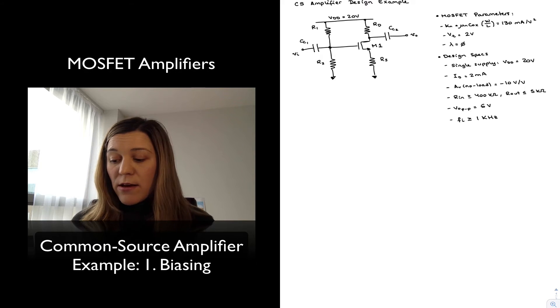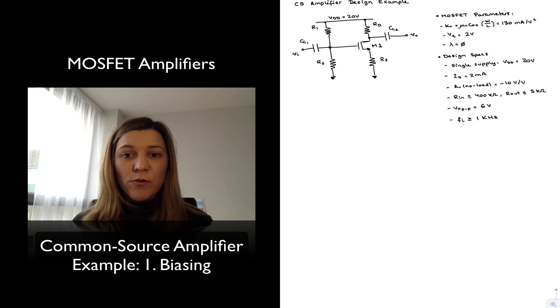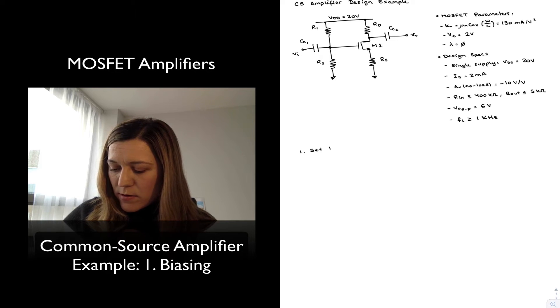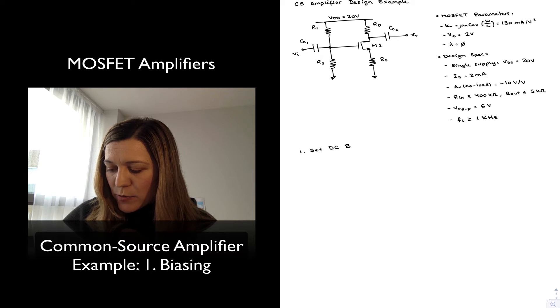So let's get started. The first step always when we're designing an amplifier circuit is to set the DC bias point. So that's what we're going to do. Step number one, I'm going to set my DC bias point.